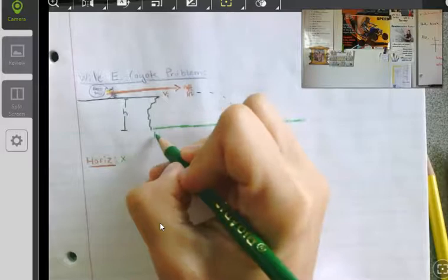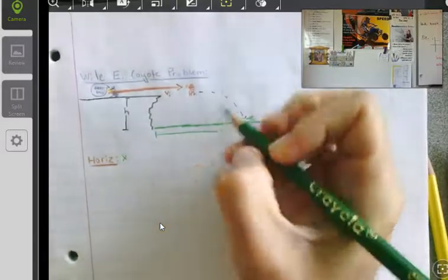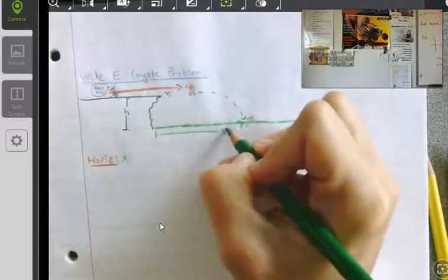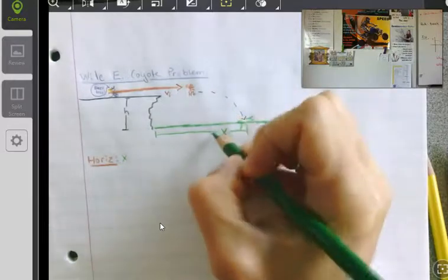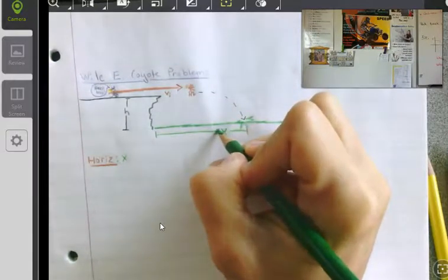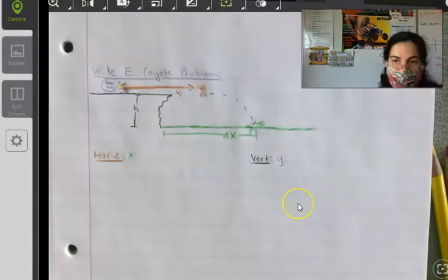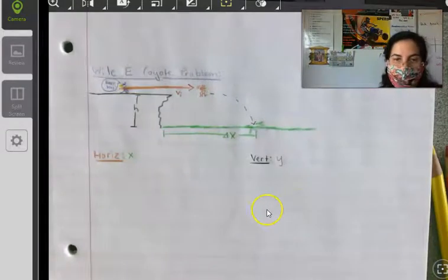The range, how far from the edge of the cliff the Coyote lands, is going to be something in the land of delta X, the change in X. Where will the Coyote land? Let's solve for it.